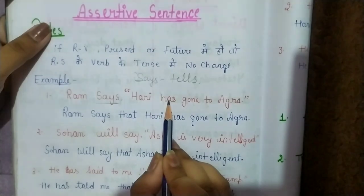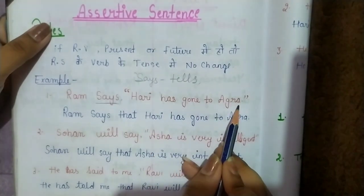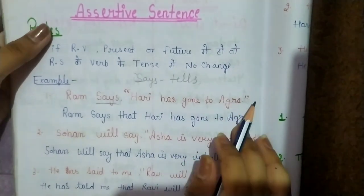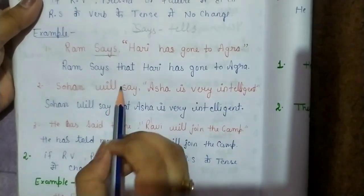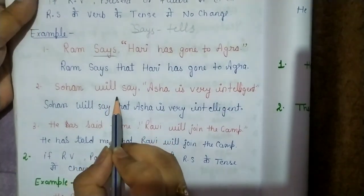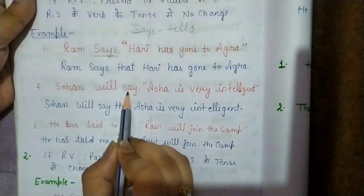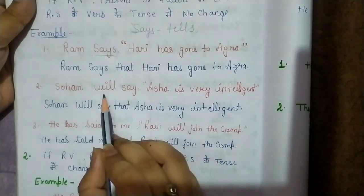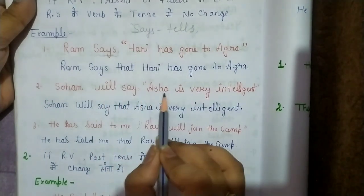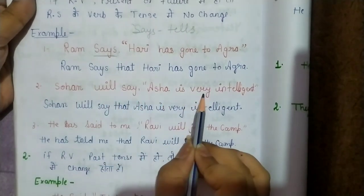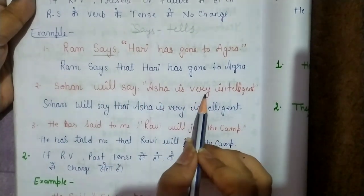Hari has gone to Agra. Let's see another example. This is in future tense: Sohan will say — Asha is very intelligent. Asha is a very intelligent girl.